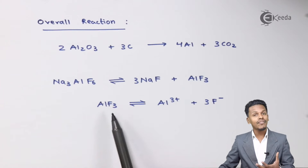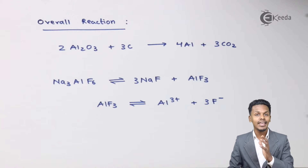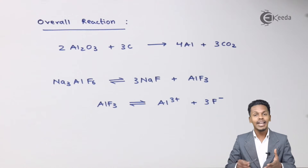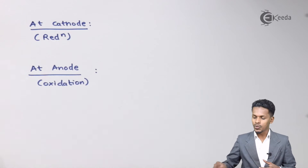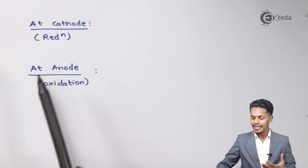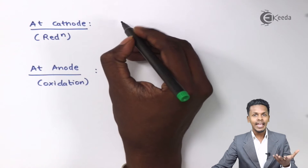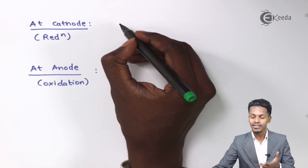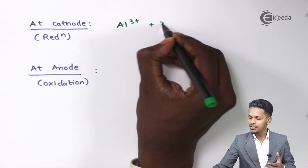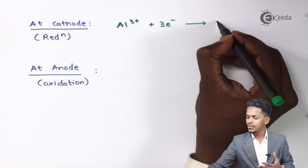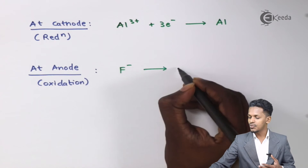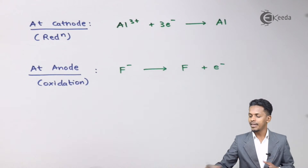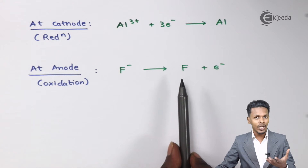Because AlF3 has been dissociated into its respective ions, these ions will undergo oxidation and reduction. At the cathode, reduction takes place and at the anode, oxidation takes place. The Al3+ ions will accept 3 electrons so as to reduce into aluminum metal. While the fluorine in the form of F− ions will be oxidized to give F along with electrons. However, fluorine does not exist in a monoatomic state, so we need to balance the equation.